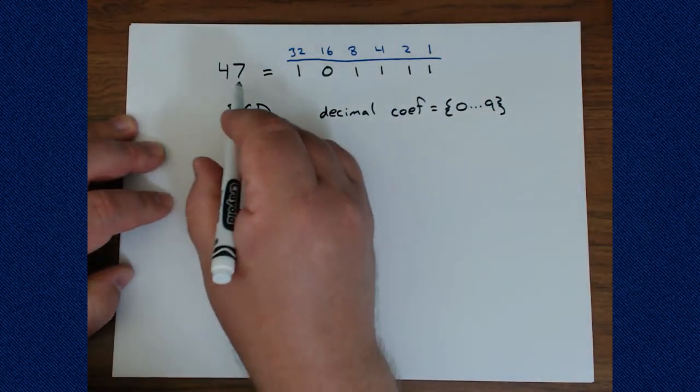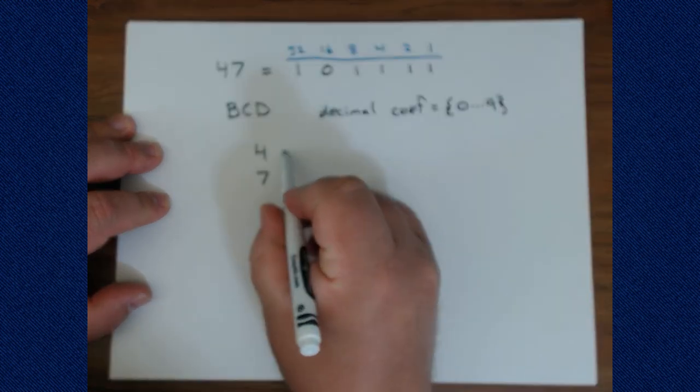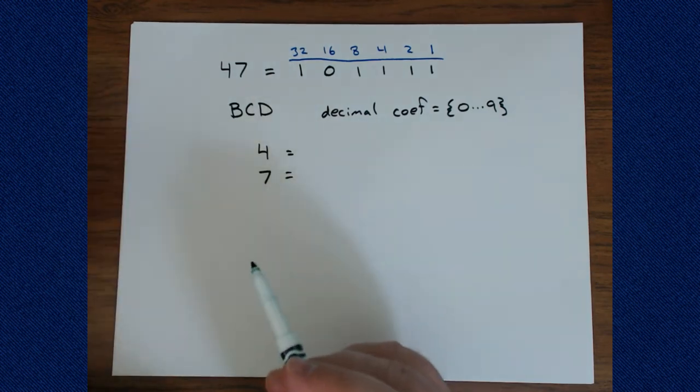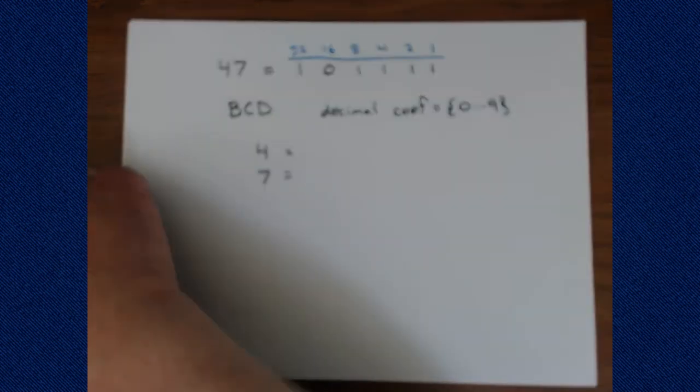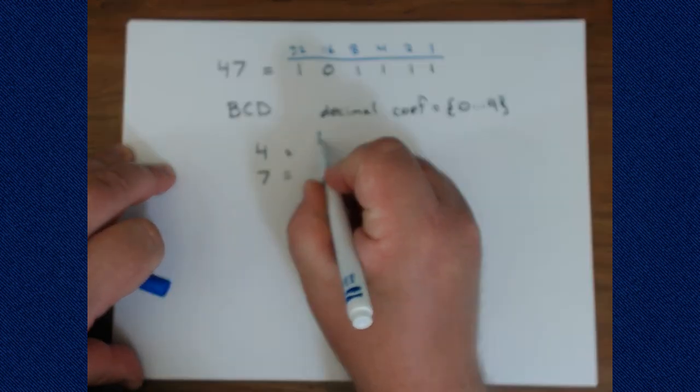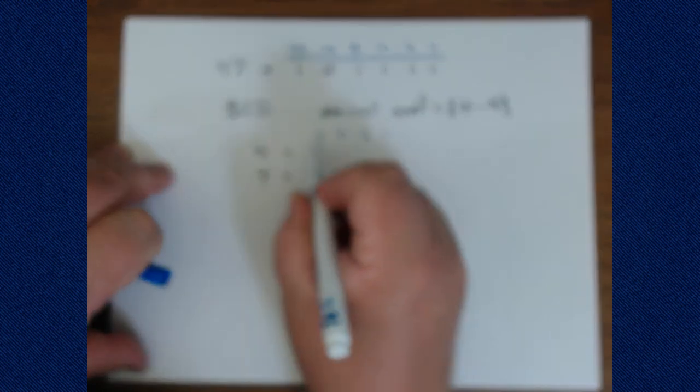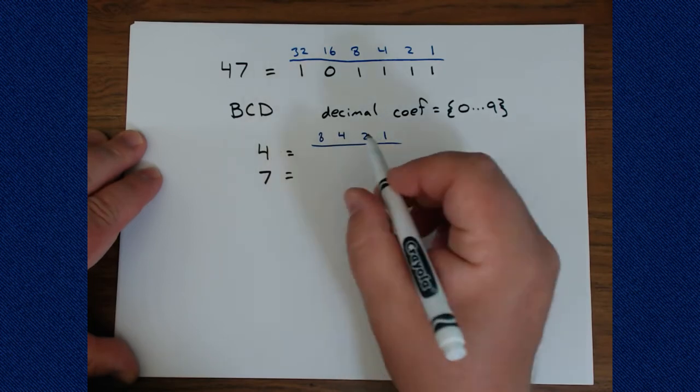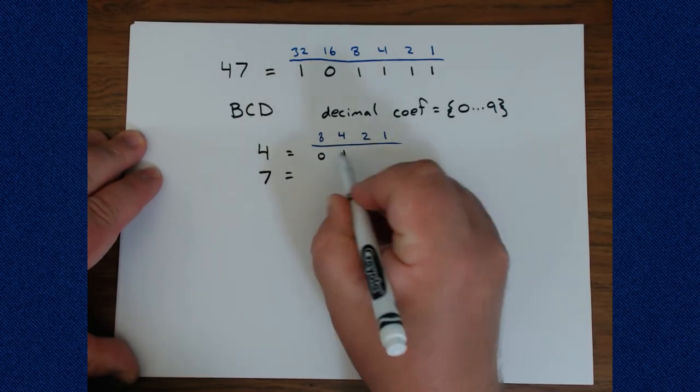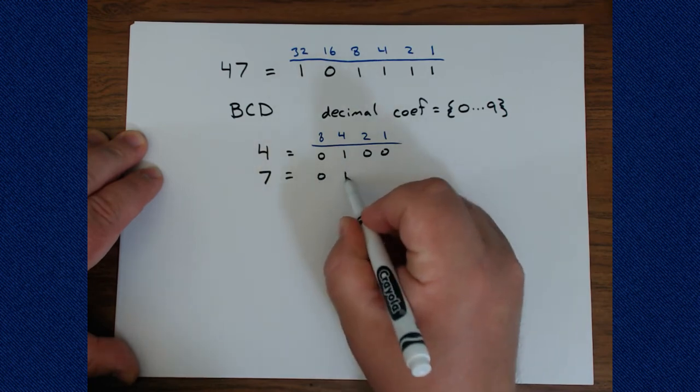Now let's write that out. We'll just pick some numbers from here that we were working with. So let's say we have a 4 and let's say we have a 7. And we want to show those individual values as binary patterns. So we know we only need 4 bits: the 8 bit, the 4 bit, the 2 bit, and the 1 bit. For each of these then, 4 is going to be a 1 in the 4 bit and a 0 everywhere else. And a 7 is going to be 1, 1, 1.